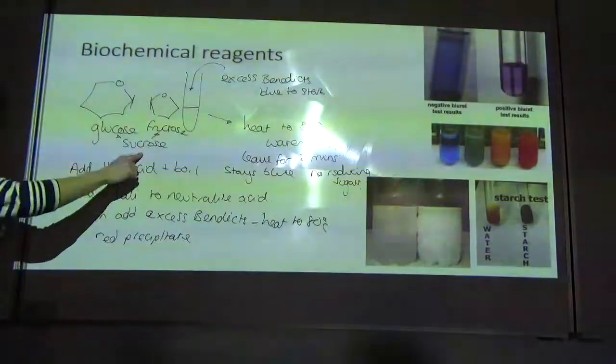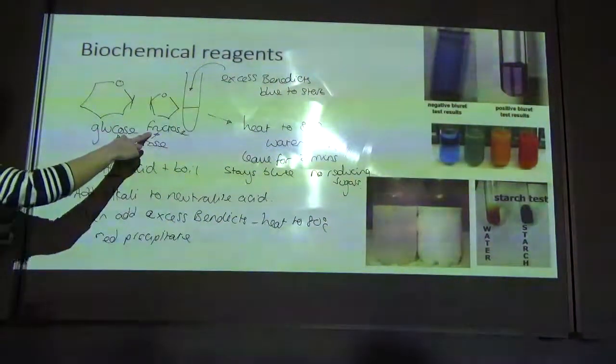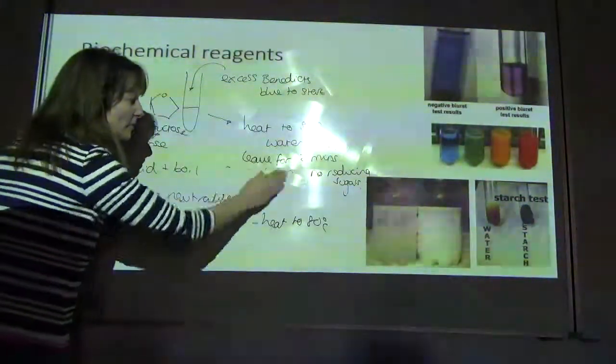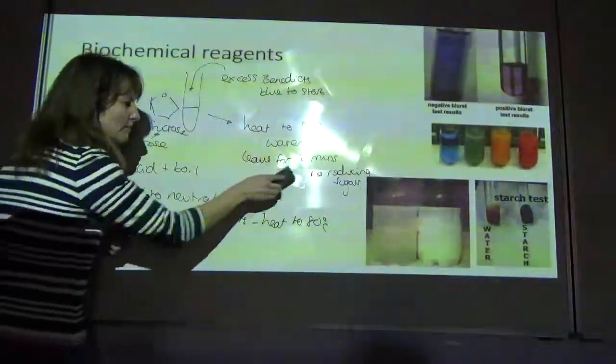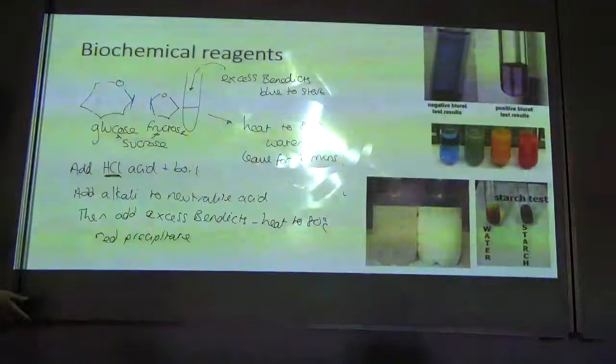Again, so you just go from sucrose, add your sucrase, that would give you those two molecules which are reducing sugars. You'd add your Benedict's, you'd heat to 80 degrees, you'd leave for a few minutes, and instead of staying blue, it would go red because your sucrase had broken down your sucrose into glucose and fructose.